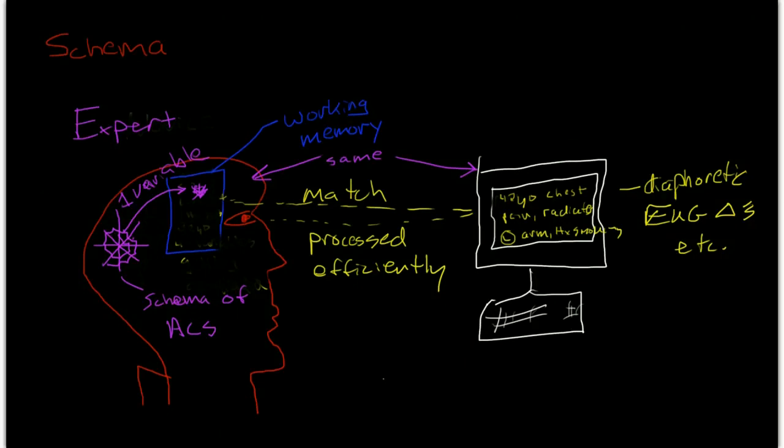So, the major difference between the novice and the expert is not the fact that they have increased working memory capacity, but they're able to use their working memory capacity much more efficiently because of the existence of schema, which provides a model for them to connect data points onto and process a whole bunch of data points as one single data point.